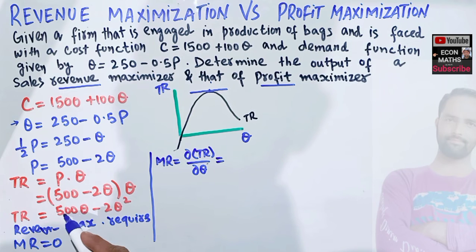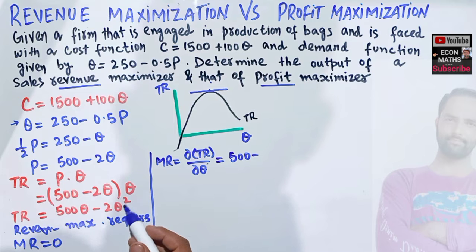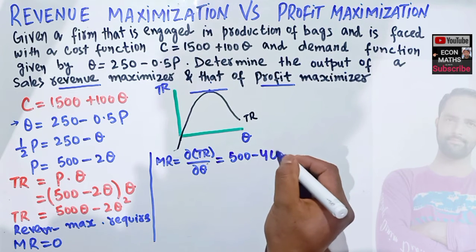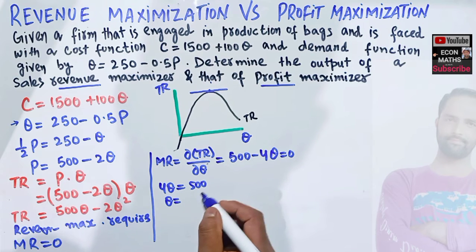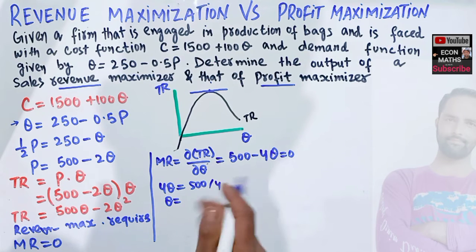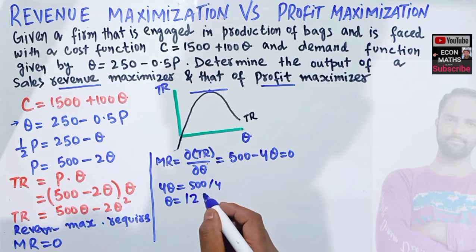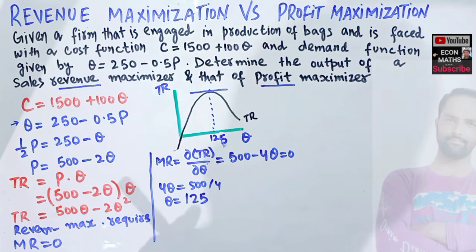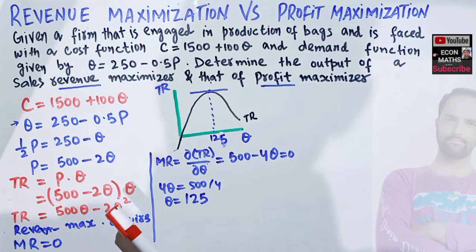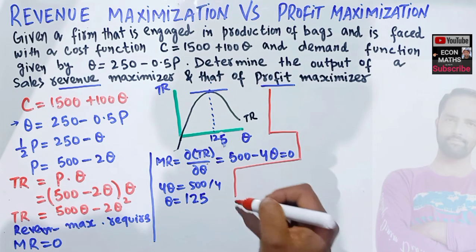Taking the derivative of TR with respect to q: d(TR)/dq = 500 − 4q. Setting this equal to zero gives 4q = 500, so q = 125. At an output level of 125, our sales revenue will be maximized. This completes the first part.